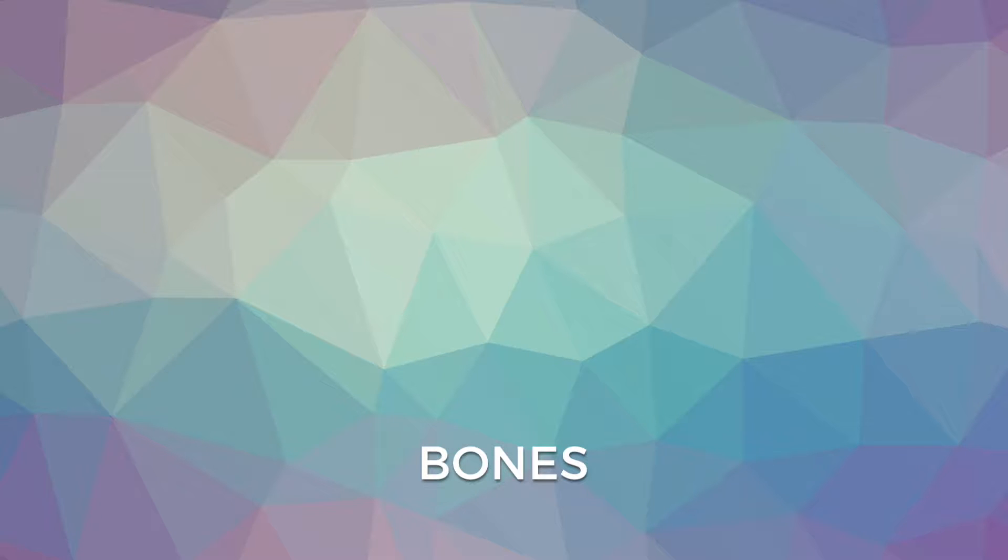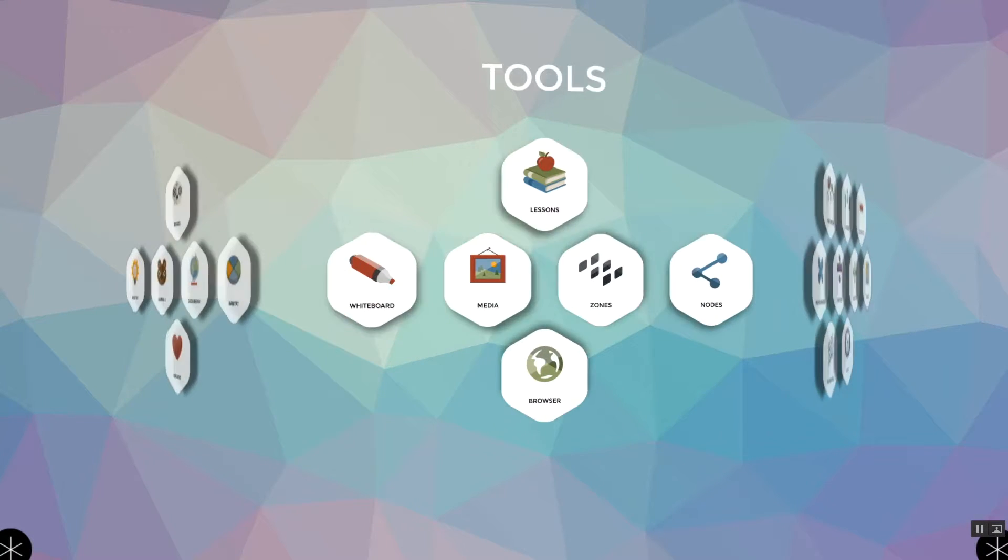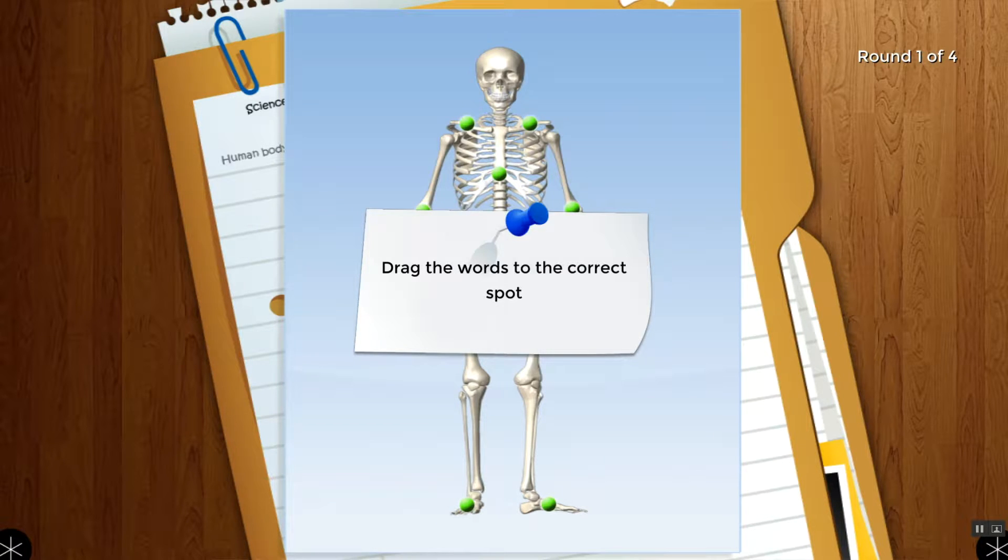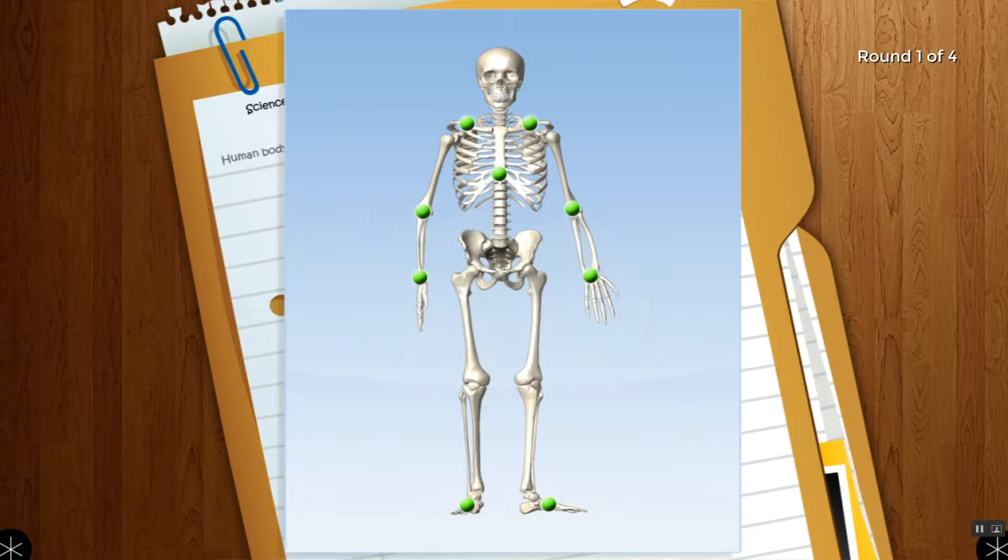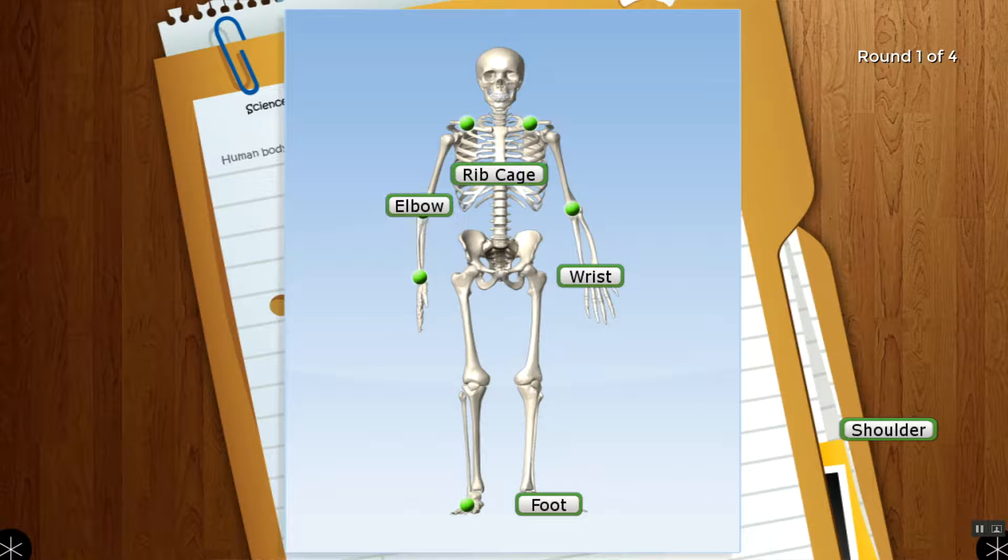We'll start with the Bones app. Bones is good for use during an instructional unit about the human body. After you launch MultiTeach, you can swipe to the right to access the science category apps. Select the Bones icon in the science menu to open it. Directions for use appear at the beginning of each of four rounds.